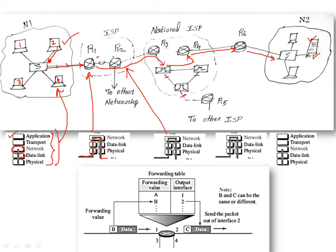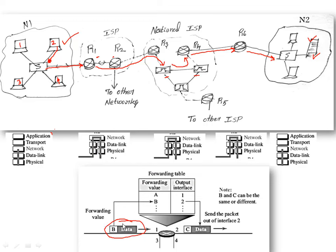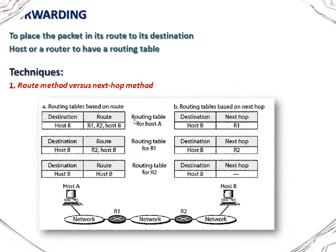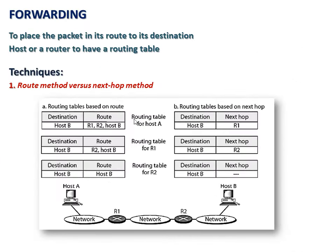Two data link layers and physical layers are connected to each router. The router maintains a table containing all information about the destination network and the interface to be connected. This is the packet — the data to be transmitted — arriving from network 1, and it initially searches the network address. If the network address is matched, the corresponding interface is used to transmit the packet further.